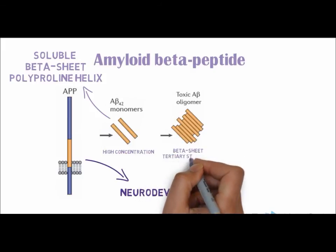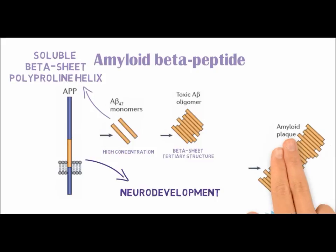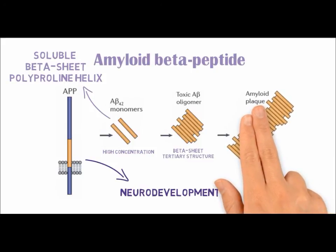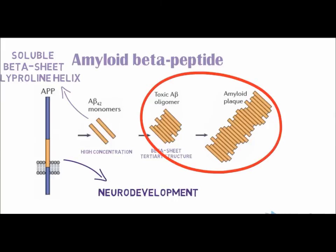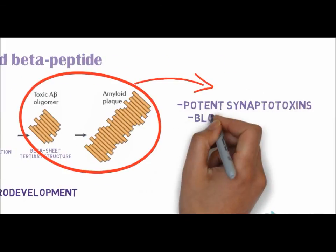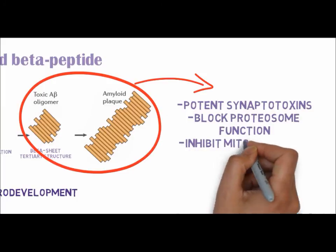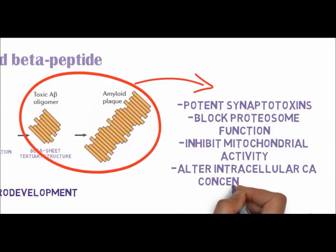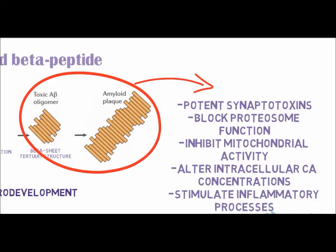The fibrils deposit outside neurons in dense formations known as senile or neuritic plaques. The amyloid plaques are potent synaptotoxins and are able to block proteasome function, inhibit mitochondrial activity, alter intracellular calcium concentration, and stimulate inflammatory processes. Synaptotoxins and a change in intracellular calcium concentration in neurons prevent the neurons from communicating efficiently with neighboring neurons, hence leading to neurodegenerative disease. Inhibition of mitochondrial activity prevents neurons from generating ATP, depriving them of energy required for cellular processes.